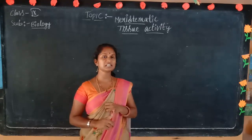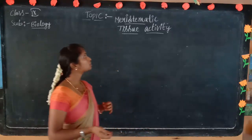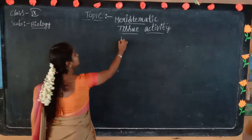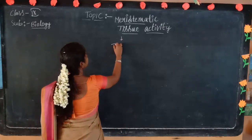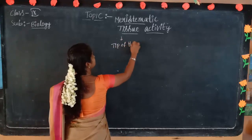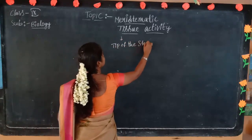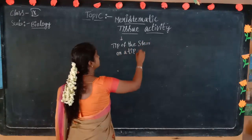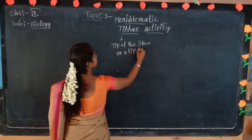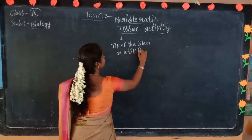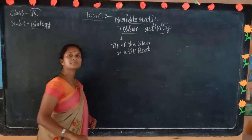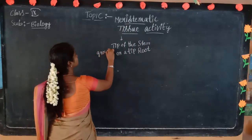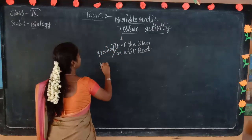We already discussed this in the last classes, and we also discussed meristematic tissue. Meristematic tissues are found at the tip of the stem or the root tip, and they are continuously growing and dividing.